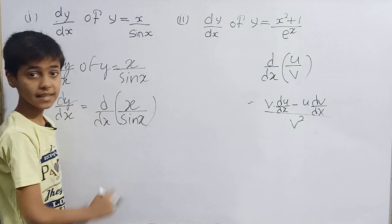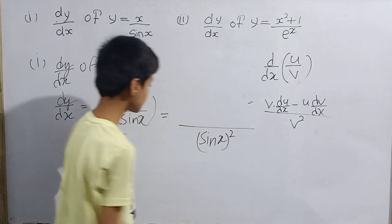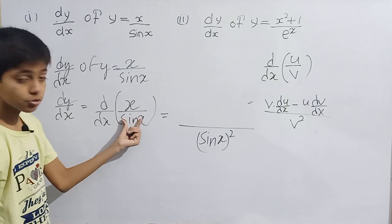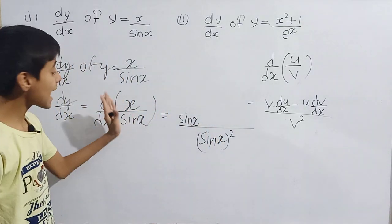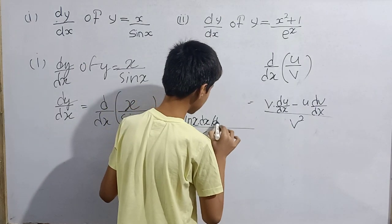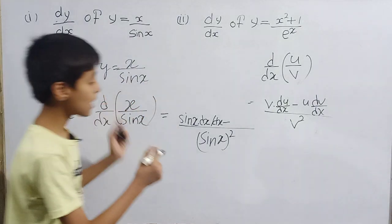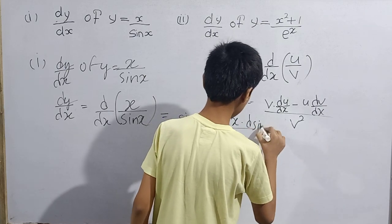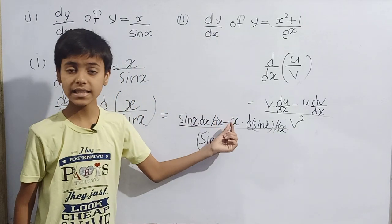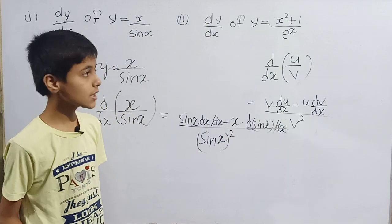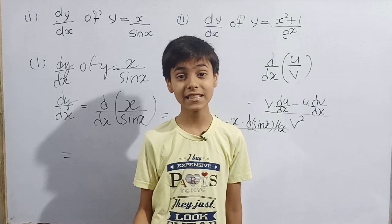According to that, if I take x as u and sin(x) as v, then in the denominator I have sin²(x). In the numerator: sin(x) multiplied by the differentiation of x with respect to x, minus x multiplied by the differentiation of sin(x) with respect to x. Now dx/dx is of course 1 — just as dy/dy is 1 or dz/dz is 1.